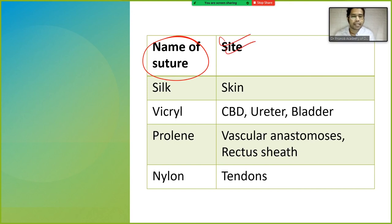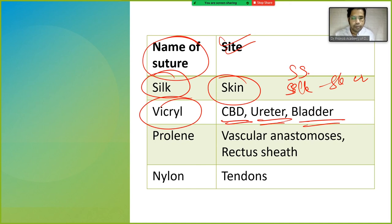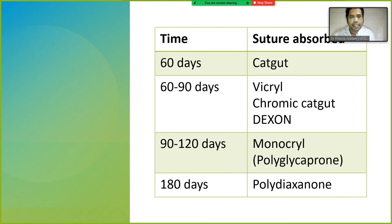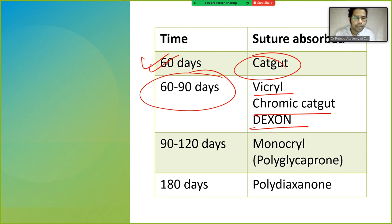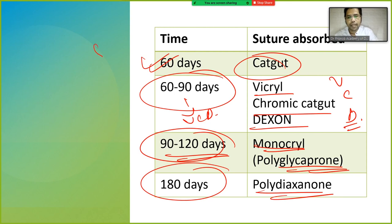A useful summary of suture uses: Silk is used in skin, CBD, gallbladder, ureter, and bladder. Prolene is used for vascular anastomosis and rectus sheath. Nylon is used for tendons. For absorption timing: catgut — 60 days; Vicryl, chromic catgut, and Dexon — 60 to 90 days; Monocryl — 90 to 120 days; PDS (polydioxanone) — 180 days.